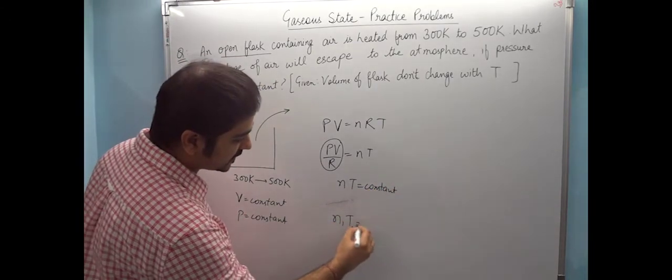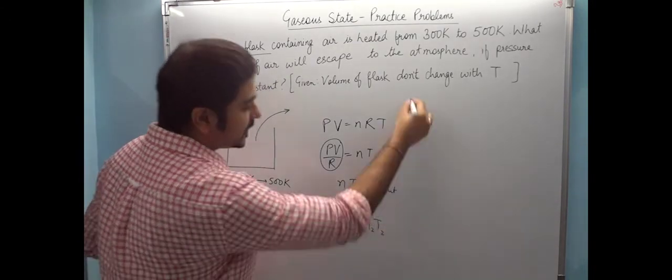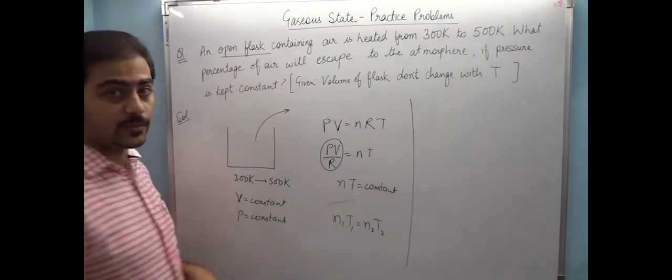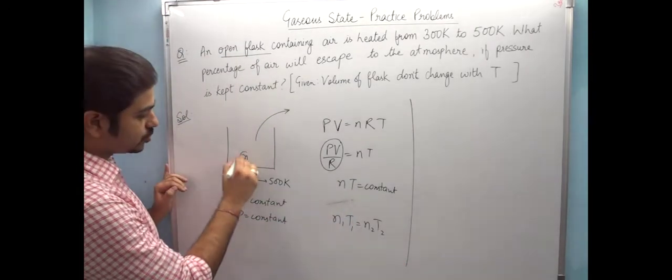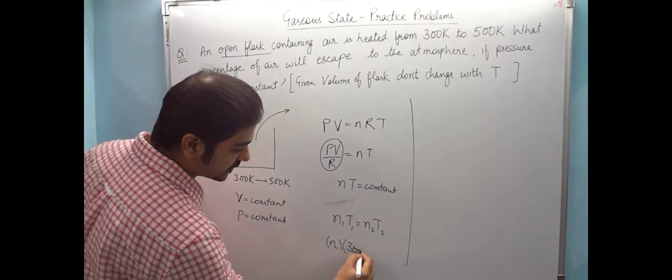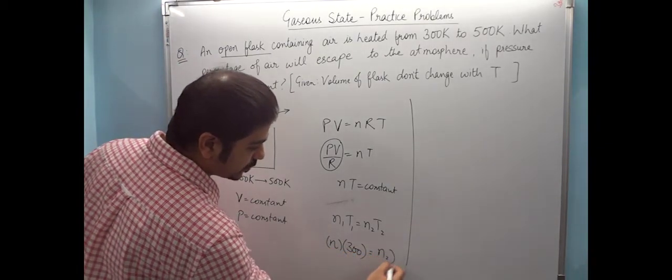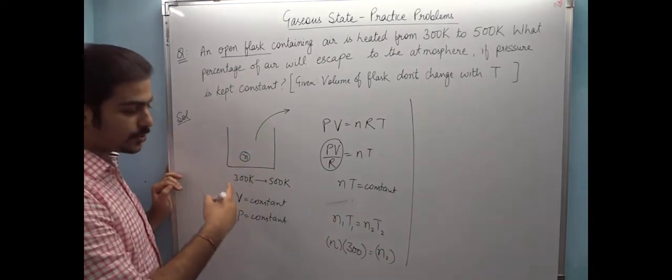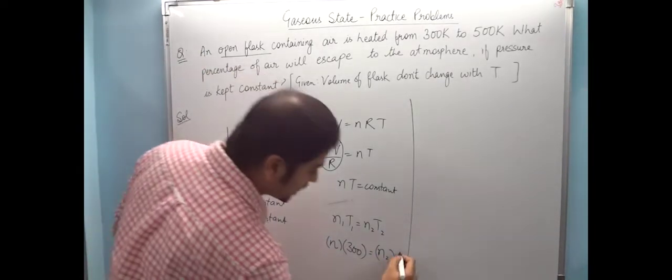n1 is the moles at the beginning. Let's suppose at the beginning we had n moles. So n1 is n at 300 Kelvin, and after heating, we have n2 moles that we don't know at T2, which is 500 Kelvin.